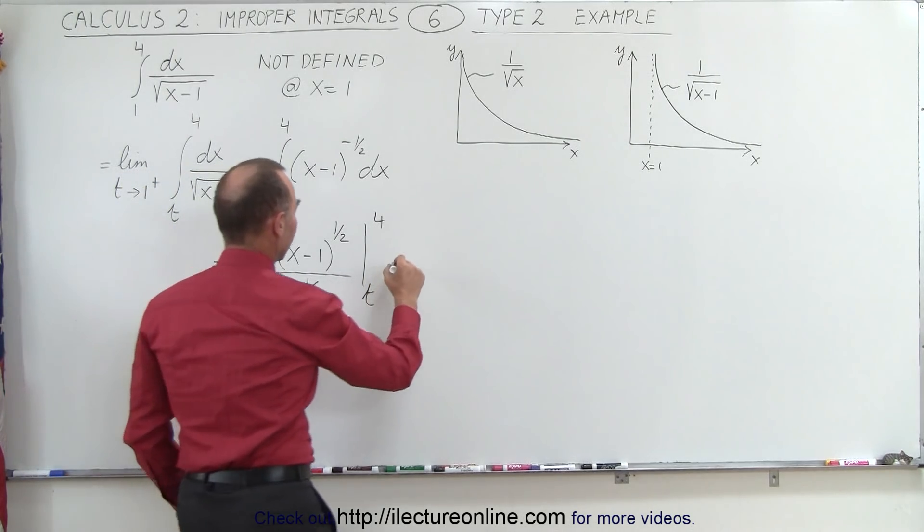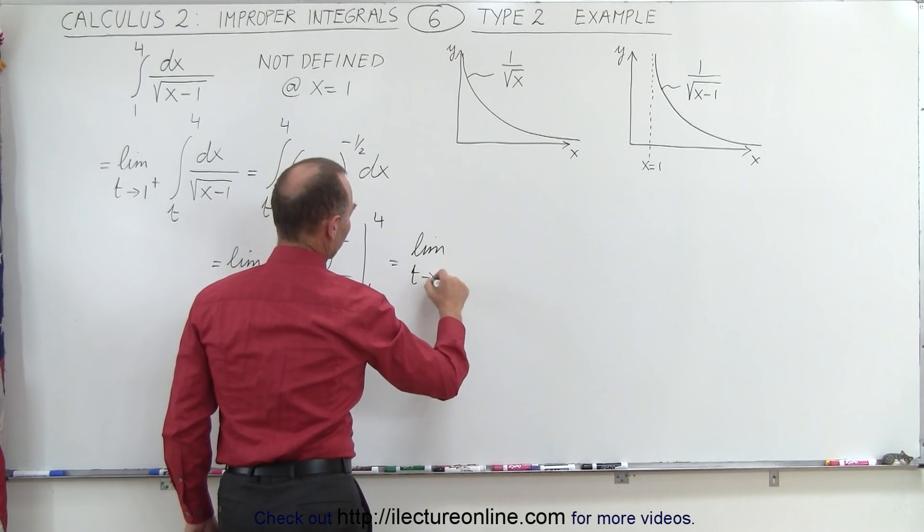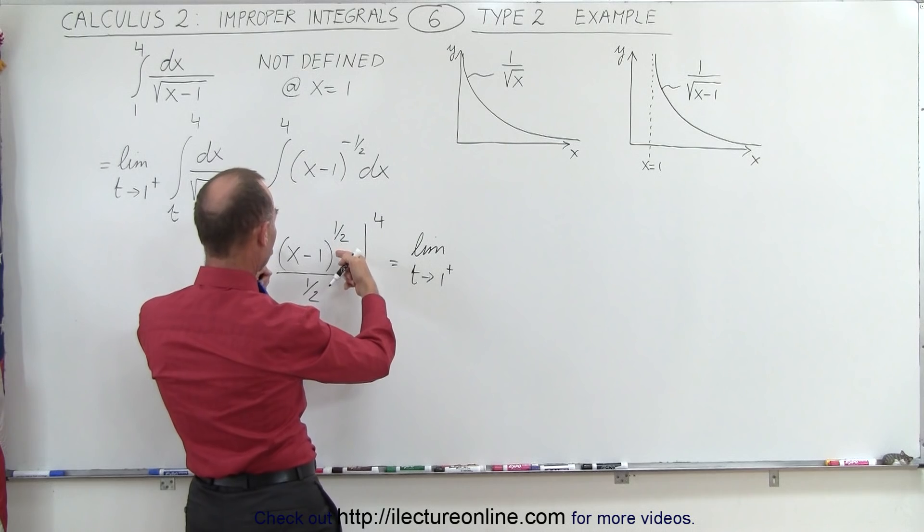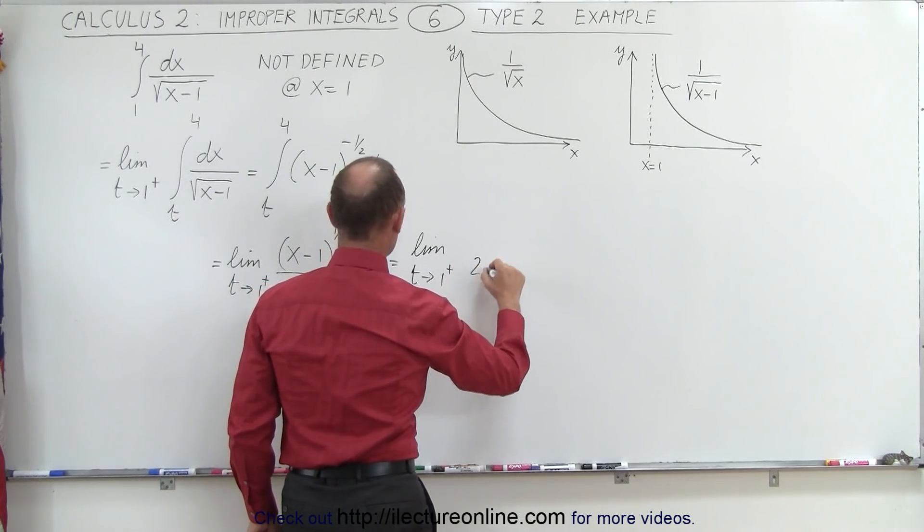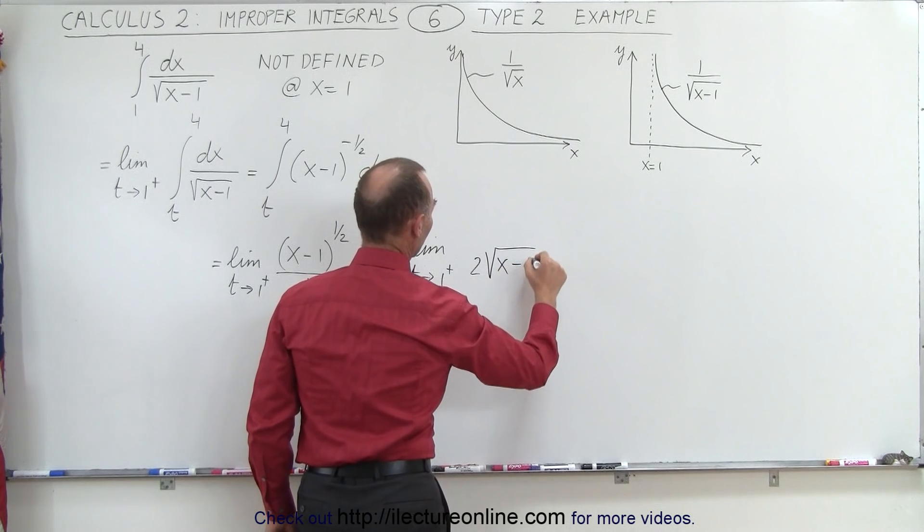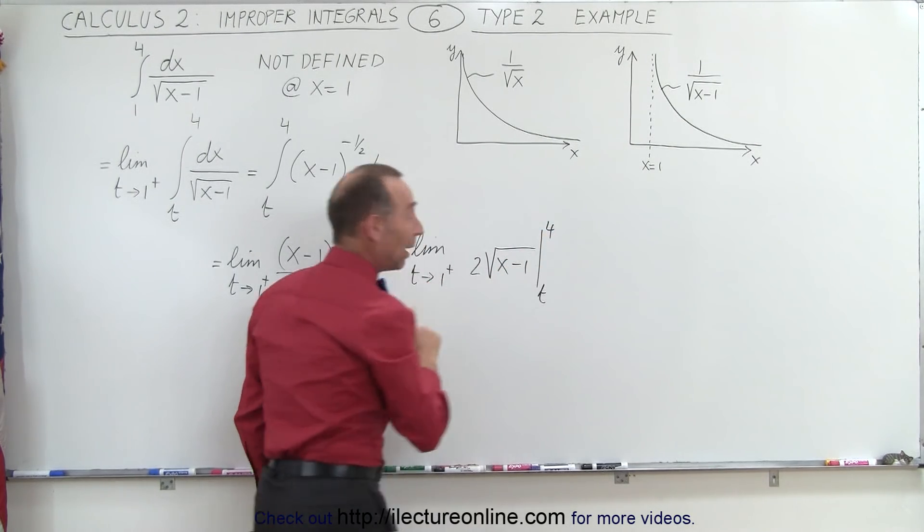Now, simplifying this a little bit, this is equal to the limit as t approaches 1 of, we'll put the 2 in the front, and like this, so this will be 2 times the square root of x minus 1 evaluated from t to 4.